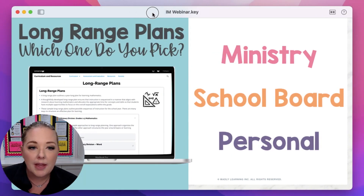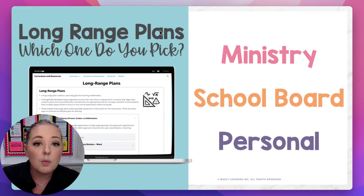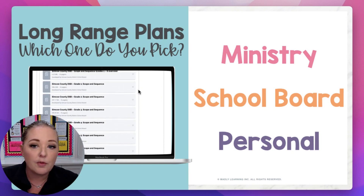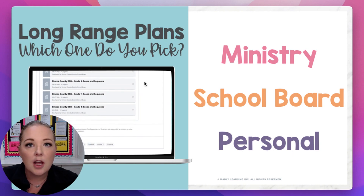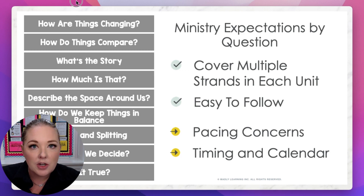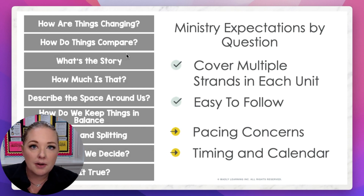When looking at long-range plans provided by ministries of education or school boards, as well as personal plans from other teachers, there are many different ways to spiral. I really like to look at the Ontario Ministry expectations because they provide a multitude of ways to plan out what long-range plans could look like. School boards also provide a systematic way to plan. However, while the ministry expectations do cover multiple strands in each unit and are easy to follow, their layout raises questions about whether those who developed them regularly teach in classrooms today.